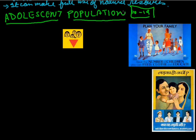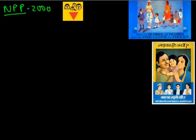A large number of adolescent girls suffer from problems like anemia, and their problems have not received adequate attention in the process of development. That is why our government started the NPP — the National Population Policy, shown here with a red triangle symbol. It was started in the year 1952, and India was the first country to start such a program to control its population. Unfortunately, the earlier family welfare programs did not fully succeed, so the government made amendments and started a new National Population Policy in the year 2000.